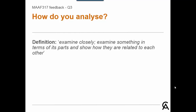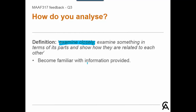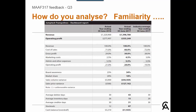The definition states to examine closely. This is done by becoming familiar with the information provided — it is necessary to identify the connections between the background information and the dashboard, as well as between various aspects of the dashboard. To perform an analysis, become familiar with the dashboard: the title, the headers of each column — actual for last year, actual for this year (2017), and the industry average. We also need to become familiar with what's in each row: revenue and operating profits in dollars, then a short income statement with all items as percentages of revenue, then information on brand awareness and market share, some sales variances, working capital ratios, as well as information on stockouts and the cash balance.